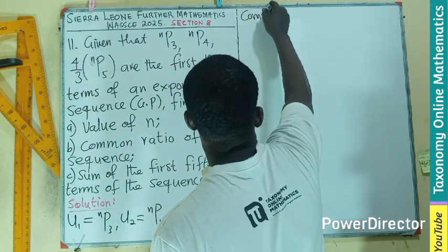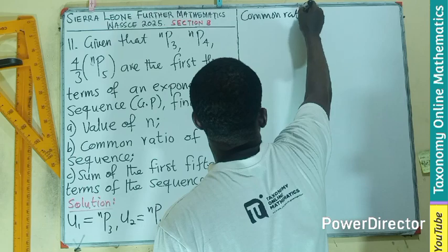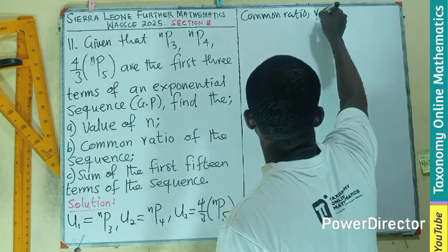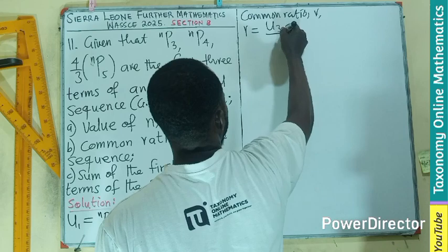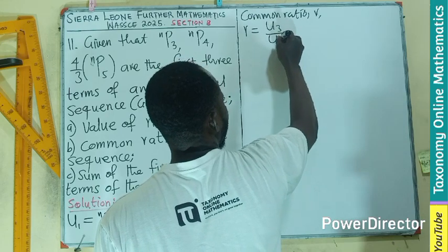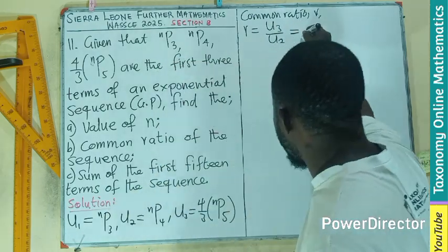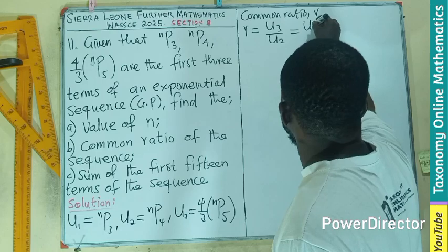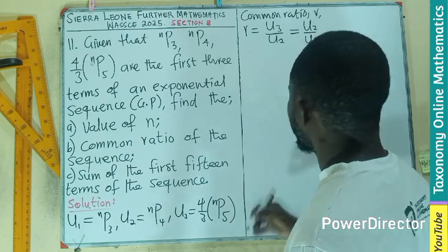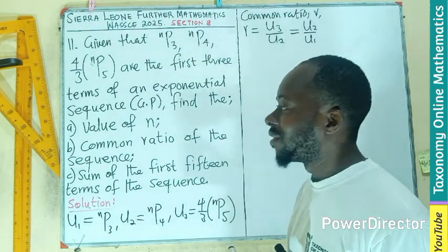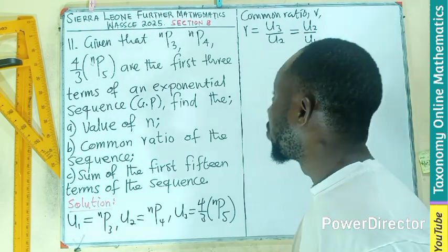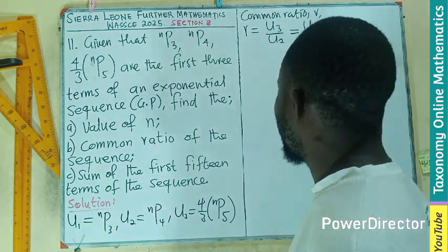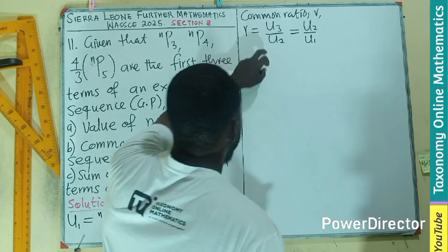In GP, the common ratio, which is given by R, is going to be the third term divided by the second term, which should be the same as the second term divided by the first term. If we are picking this verbatim from the definition of common ratio, let's see.